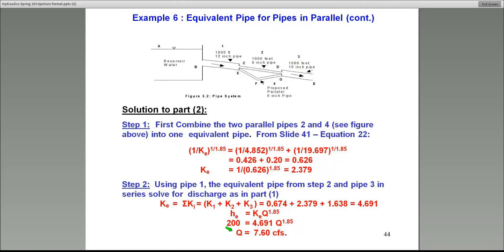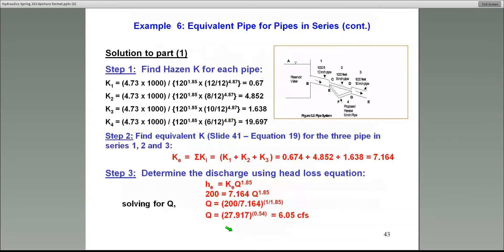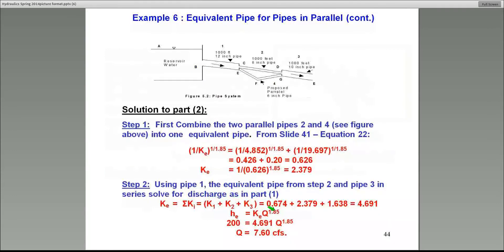Now, if you note, in the previous case, the flow rate was smaller at 6.05 CFS. There's a slight increase in the flow rate primarily because of the fourth pipe we just added in the system. That essentially demonstrates how to handle pipes in series or pipes in parallel in such problems.